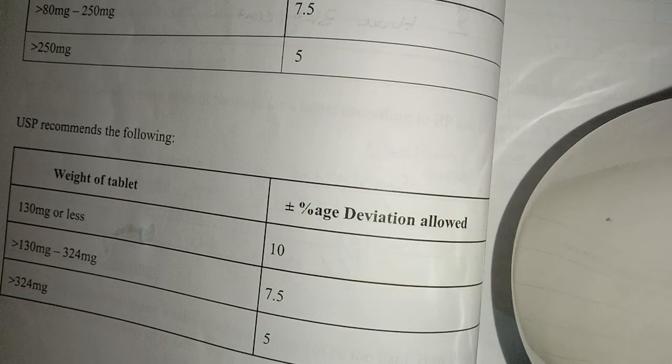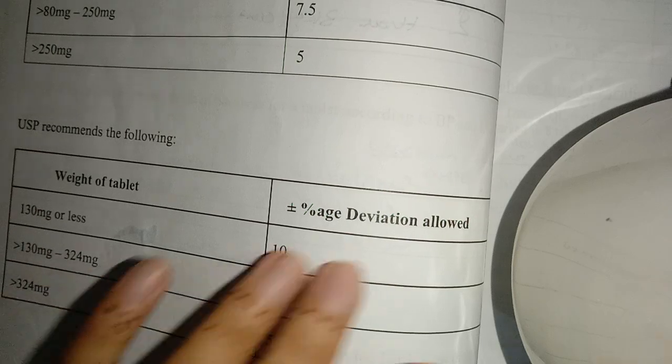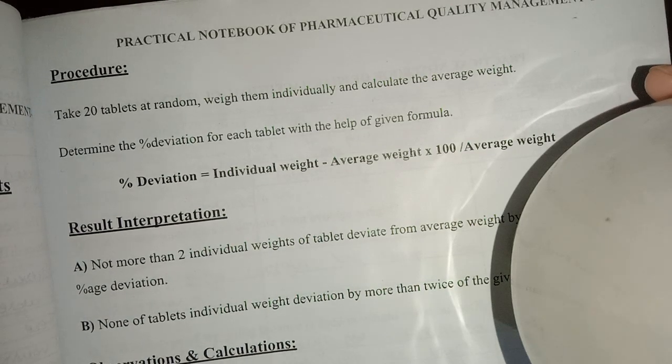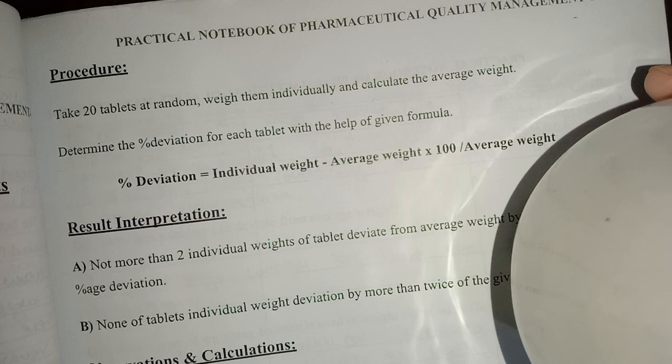130mg for USP. We can see the procedure. We will need to find the average weight. Take the number of tablets - we have 20 tablets - and then calculate the average weight.